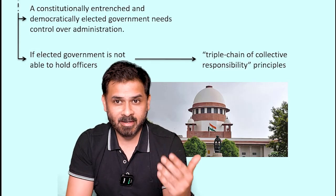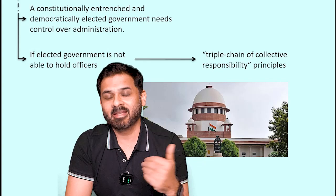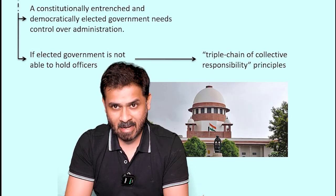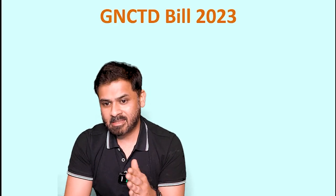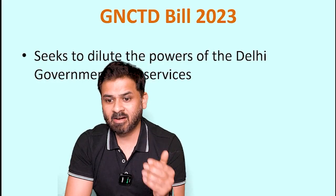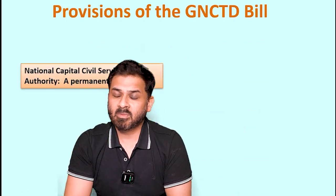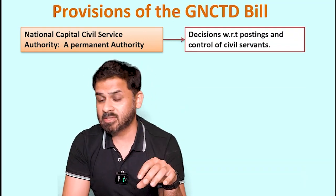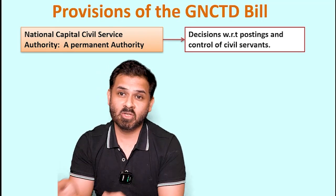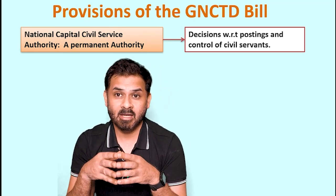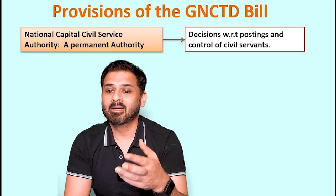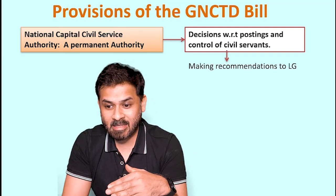After this judgment the government brought an ordinance to overrule it, which was also questioned in court. While the court was still deciding on the ordinance, the government brought the GNCTD Amendment Bill 2023, which has now been passed and is about to become an act. This bill seeks to dilute the powers of the Delhi government over services. Firstly, it establishes the National Capital Civil Service Authority (NCCSA) as a permanent authority to take decisions on postings and control of civil servants.